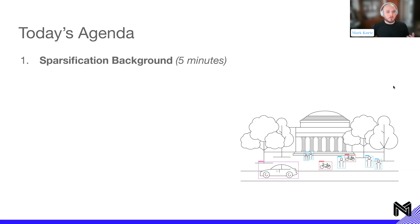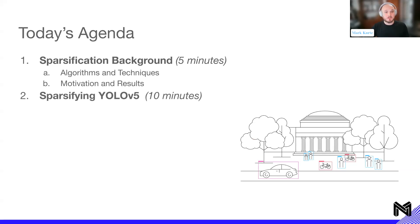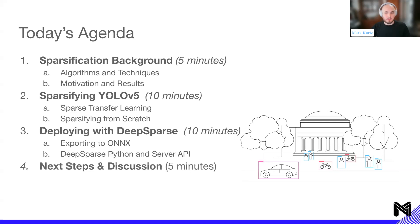Running through today's agenda: we'll cover background on sparsification — algorithms, techniques, motivations, and results, especially towards performance. Then we'll talk about what it looks like to actually sparsify the YOLO v5 models, specifically going through sparse transfer learning as well as sparsifying from scratch. And then we'll cover deploying with our DeepSparse inference engine — exporting to ONNX and running it through our DeepSparse installables with either the Python or server API. We'll end with next steps and discussion.